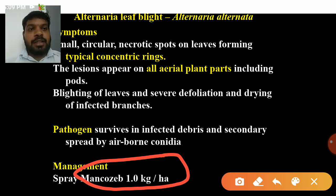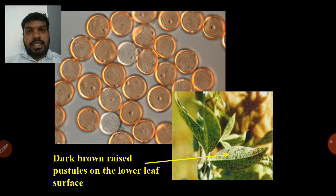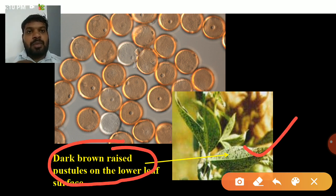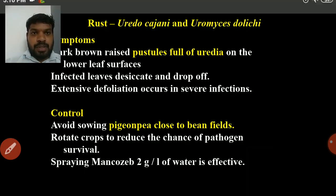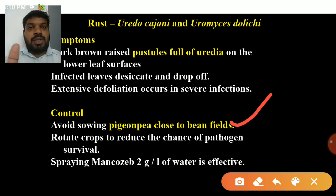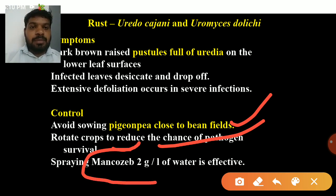Next is rust of PGNP, caused by Uredo cajani. It produces dark brown raised pustules on the lower surface of the leaf. Control: avoid sowing pigeon pea close to bean fields, as beans are severely infected by rust disease. Rotate crops to reduce the chance of pathogen survival. Spray mancozeb at 2 grams per liter of water.